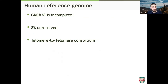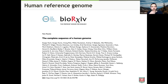Furthermore, the reference is incomplete — about 8% of the genome is highly repetitive sequence that was inaccessible with technologies used to build and refine the reference. A consortium called the telomere-to-telomere consortium is using long-read technologies to change that. About two weeks ago they published a paper with the understated title 'The Complete Sequence of a Human Genome,' where they took long reads and went telomere to telomere on a haploid cell line, representing every single base pair. That's a pretty amazing advance that will work its way into common usage over the next few years.